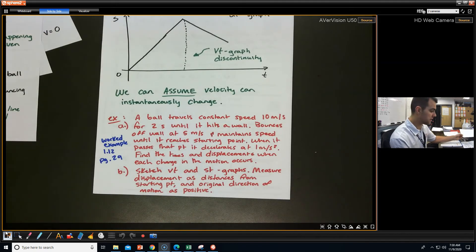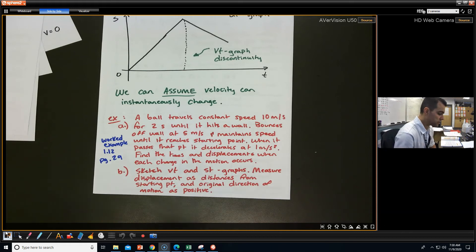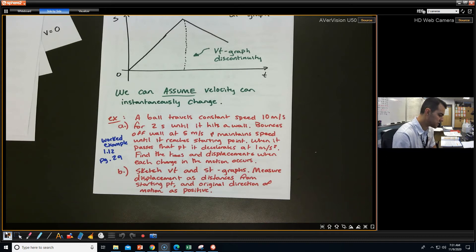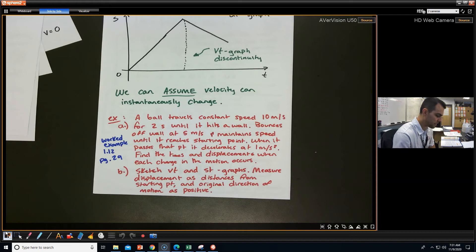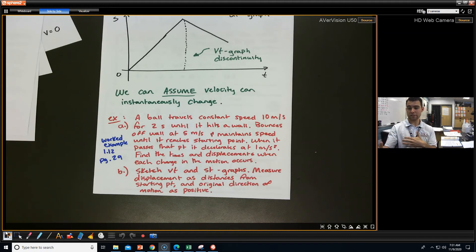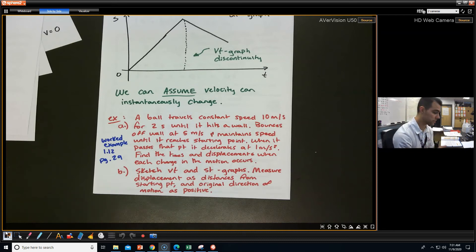Here is our last example dealing with a discontinuity — worked example 1.12 on page 29. A ball travels at constant speed 10 meters per second for 2 seconds until it hits a wall. It bounces off the wall at 5 meters per second and maintains that speed until it reaches the starting point. When it passes that point, it decelerates at 1 meter per second squared. Find the times and displacements when each change in motion occurs. We're measuring displacement as distance from the starting point, with the original direction of motion as positive.